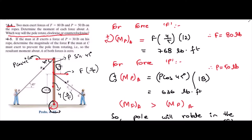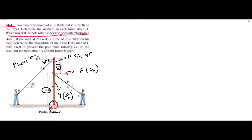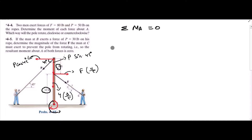For the second problem, 4-5: we are given force P and we have to determine the magnitude of force F, which is unknown. The resultant moment about point A of both forces should be zero. Our condition is that the resultant moment about point A equals zero. You can take either clockwise or counterclockwise moment as positive — I am taking clockwise moment as positive.